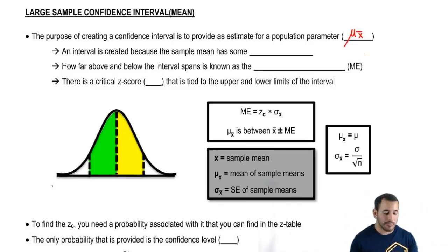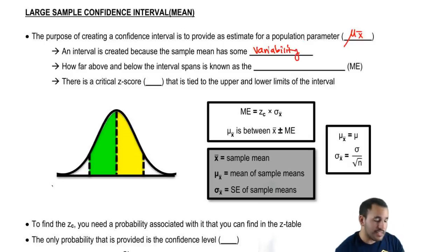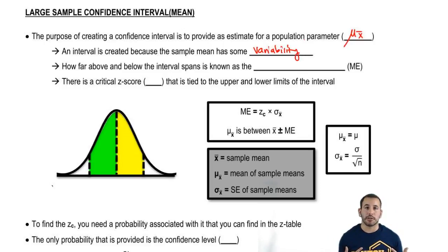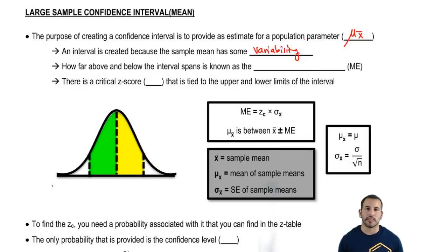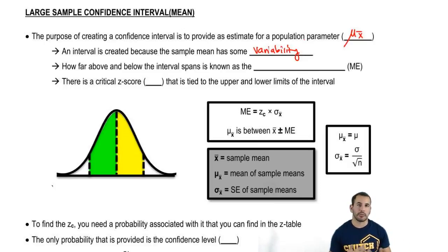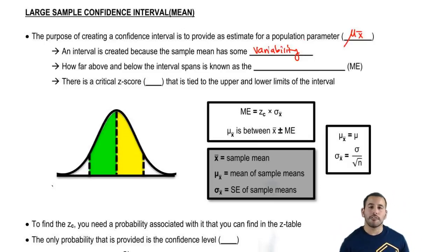An interval is created because the sample mean has some variability. We can't just get a sample mean and say that's the population mean, because at the end of the day we could have picked a random sample that's not really representative — 36 people don't represent, for example, the United States. So we have some variability in this estimate from a small sample, and that variability gives us an interval for which the population mean could lie. How far above and below this interval spans is known as the margin of error.